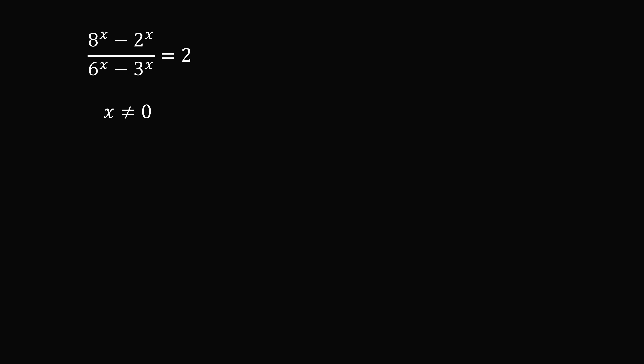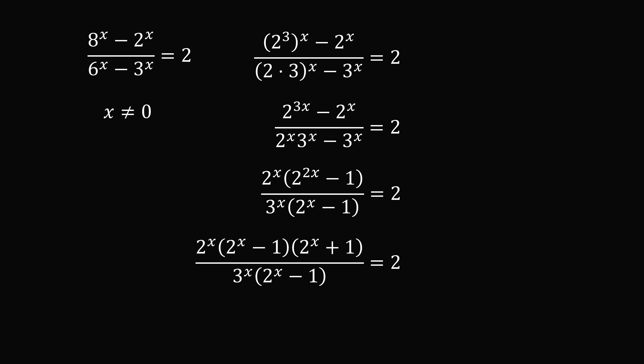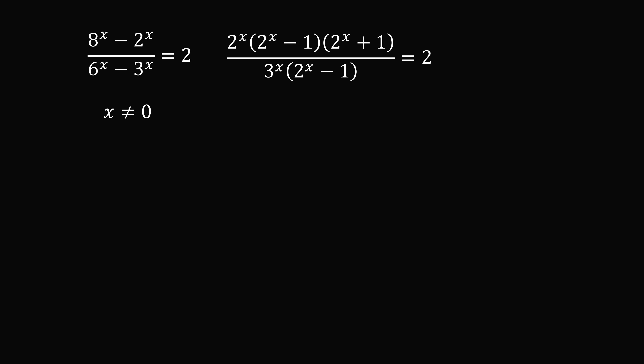From here, let's manipulate the equation. Since 8 equals 2 to the power of 3 and 6 equals 2 times 3, we use exponent rules to get 2 to the 3x minus 2 to the x, over 2 to the x times 3 to the x minus 3 to the x. We factor out 2 to the x in the numerator and 3 to the x in the denominator. Then 2 to the 2x minus 1 is a difference of squares, factored as 2 to the x minus 1 times 2 to the x plus 1. Since x is not equal to 0, 2 to the x minus 1 is not zero, so we can cancel that term.